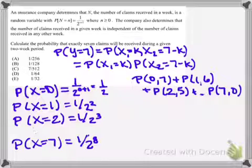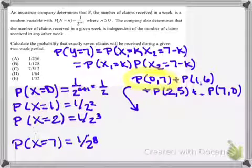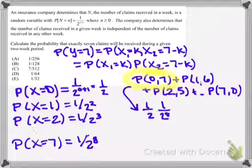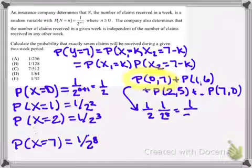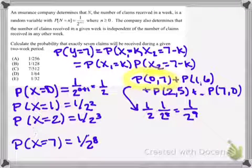Now, it looks like we've got a lot of work to do here because we do have 8 terms, but here's the beautiful thing about this question. When I find the probability of getting 0 claims in the first week and 7 in the second, it's actually going to turn out that that's a number that is going to be used over and over and over again here because to find that probability, we're going to multiply 1 over 2 times 1 over 2 to the 8th, which is going to give me 1 over 2 to the 9th.